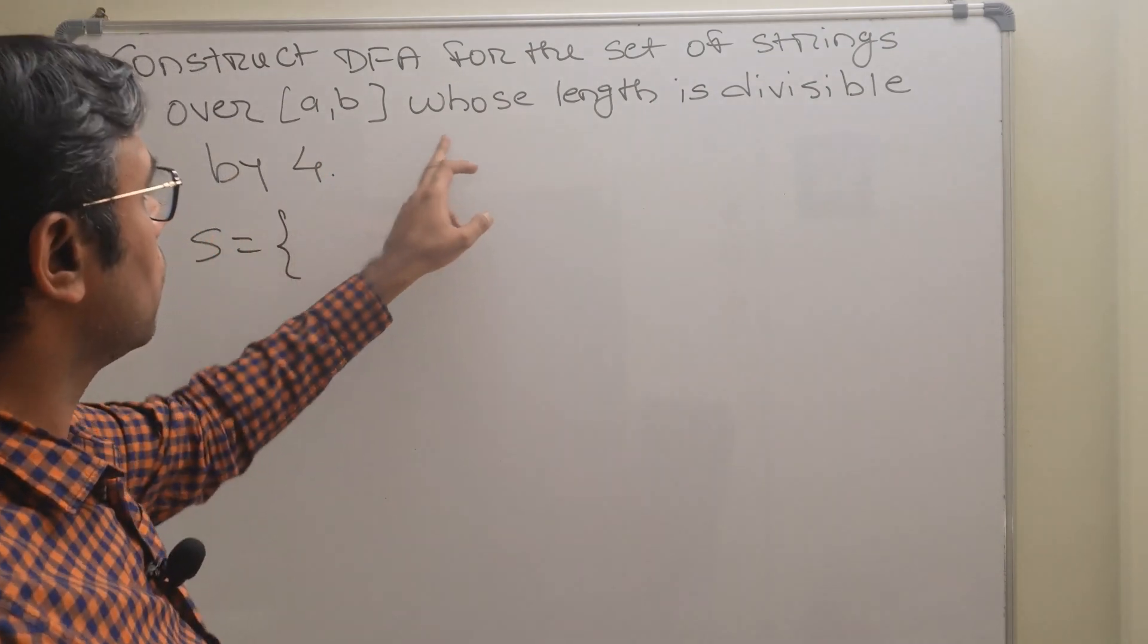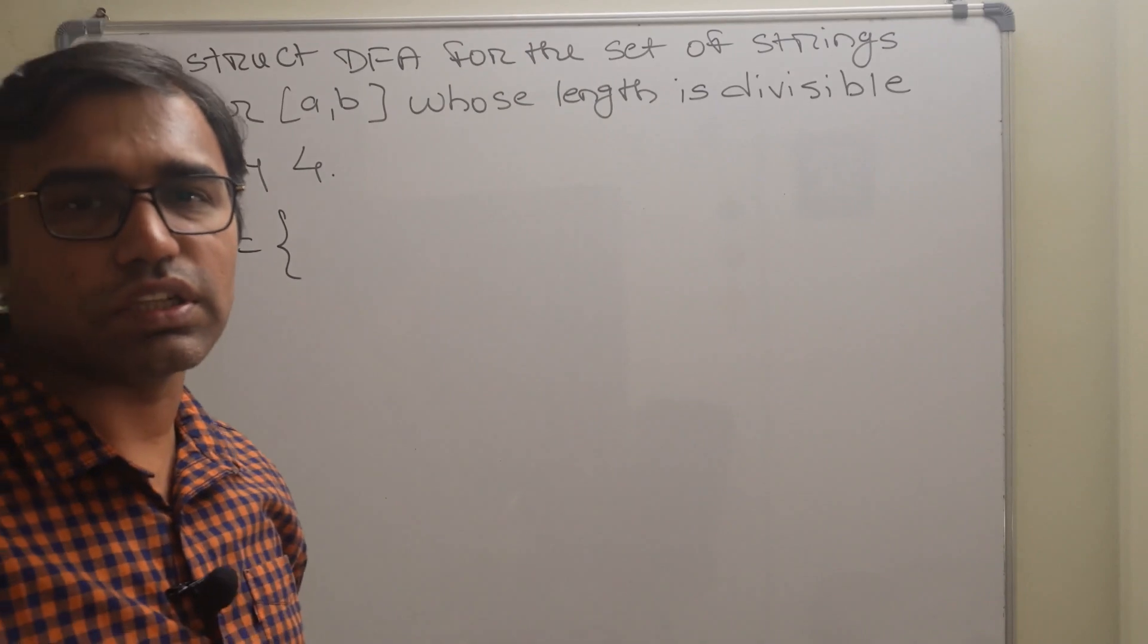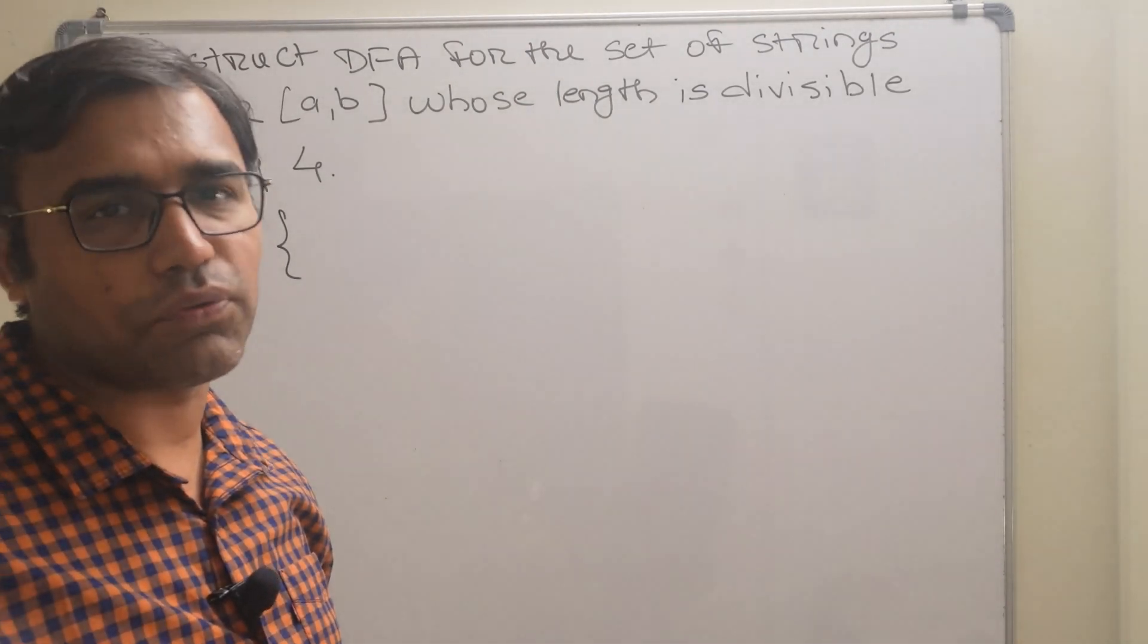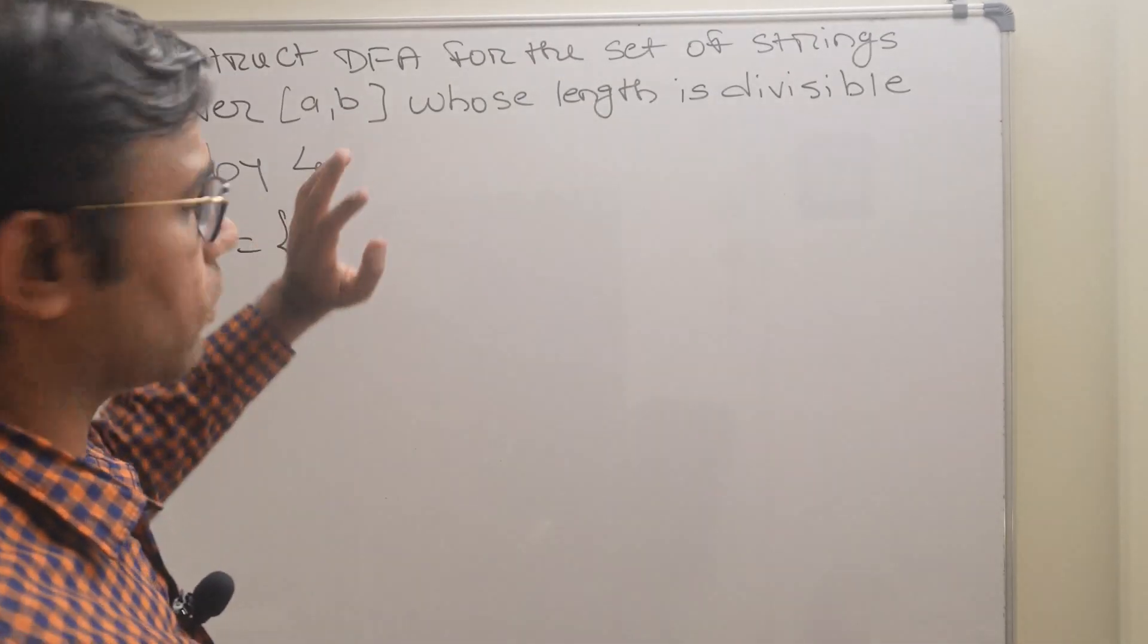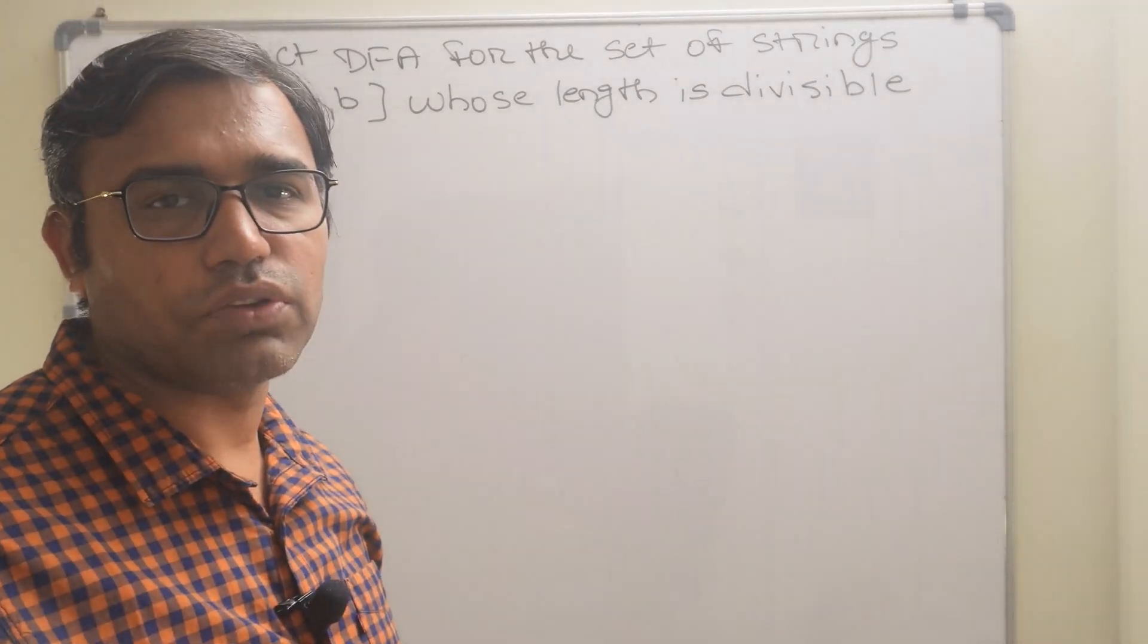symbol a comma b whose length is divisible by 4. This means we have to construct a DFA whose length is divisible by 4 over input symbols a comma b.